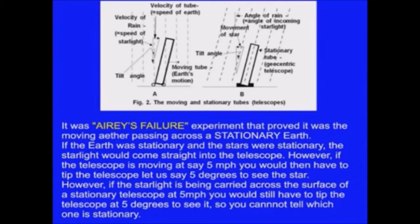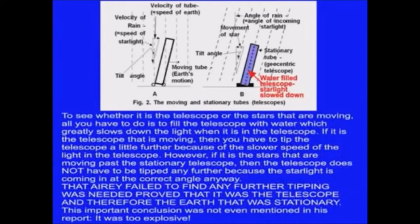Nowadays, just like the theory of heliocentricism, Einstein's theory of relativity is accepted worldwide as gospel truth, even though he himself admitted geocentricism is equally justifiable. Albert Einstein said, the struggle so violent in the early days of science between the views of Ptolemy and Copernicus would be quite meaningless. Either coordinate system could be used with equal justification. The two sentences, the sun is at rest and the earth moves, or the sun moves and the earth is at rest, would simply mean two different conventions concerning two different coordinate systems.